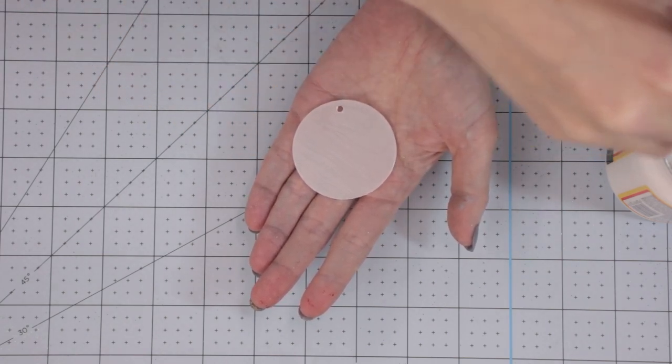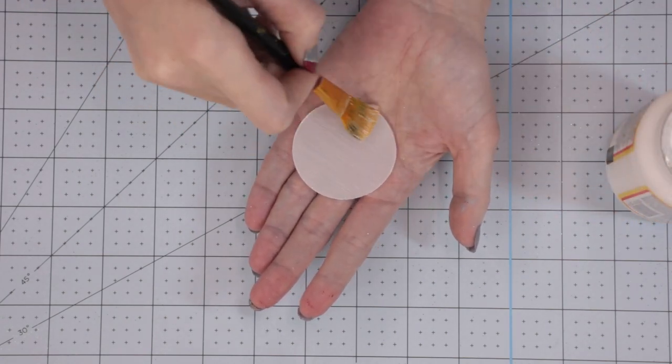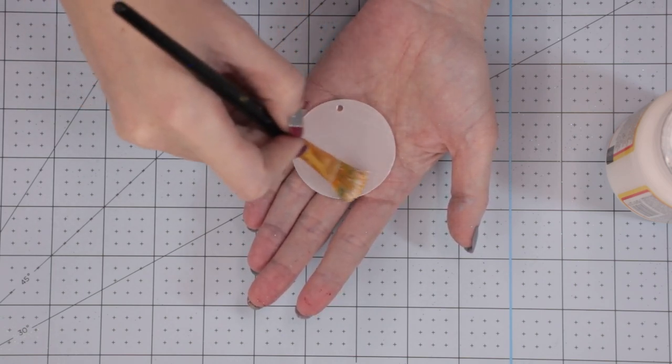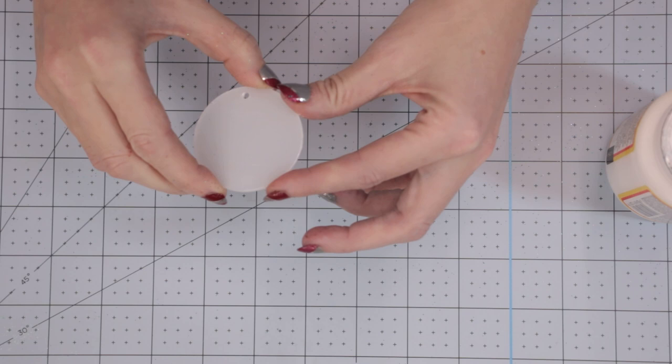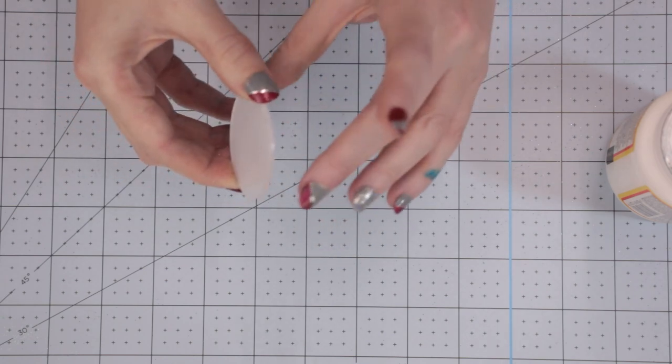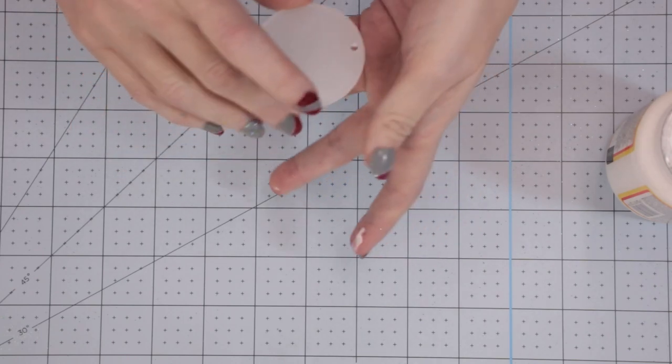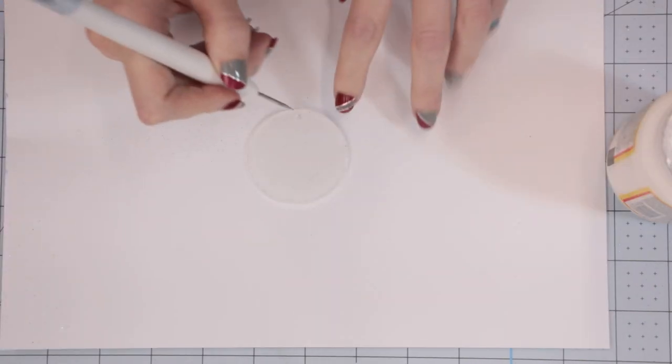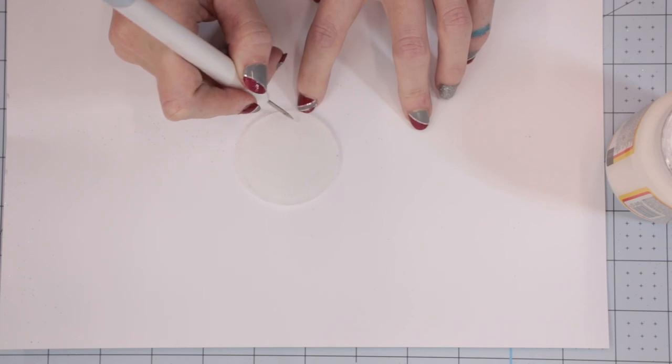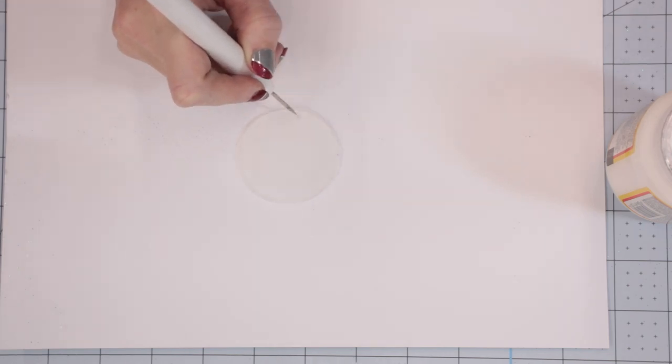Make sure you take your time with this because this is the bit that's really important if you're going to glitter. I come in and remove any excess glue from around my disc so it's not all on the sides. I'll also come in with something like a weeding tool to remove any glue that has been clogged up in the keyring hole.